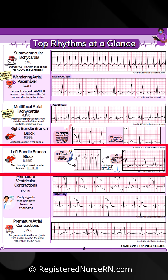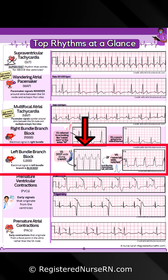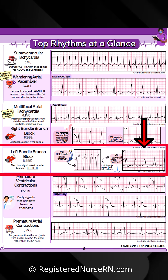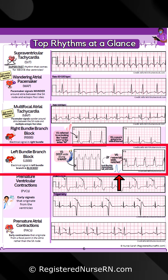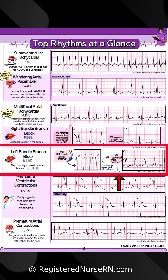Left bundle branch block is where electrical signals in the left bundle branch are blocked. In V1, you'll have a deep diving S wave like this example. And in V6, the R wave can be tall, wide, and notched like this — or it could look monophasic, tall, and wide.